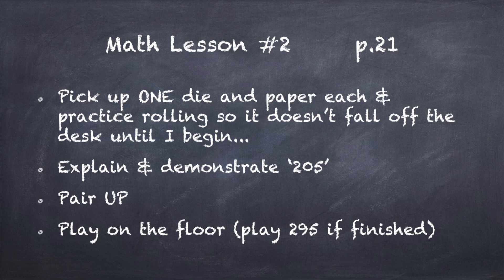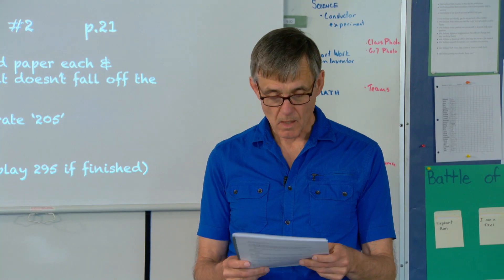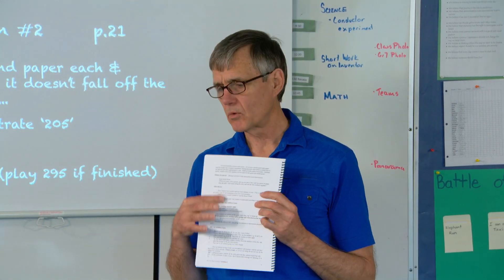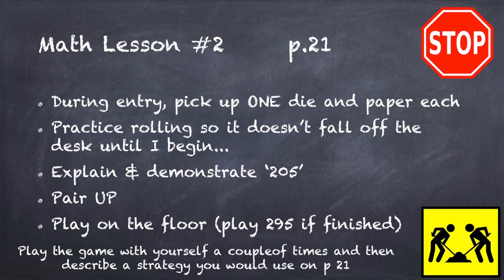After we've done the read aloud and the personal web on page 20, over to page 21, we're going to do an addition game. I won't go over it today, but it's basically a dice game — the kids make two-digit numbers and add them up to make 205, and the first one to finish wins. When you're coming in after recess, you give them one dice each, they pair up, and then they play the game.